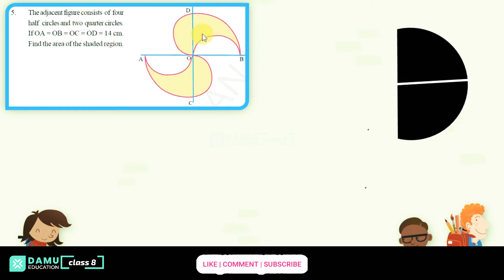So, 2 quarter circles and 2 half circles. This is 2 half circles and this is 2 half circles. This is quarter circle 2. What I've done is, I shifted this shape to here and this shape to here.